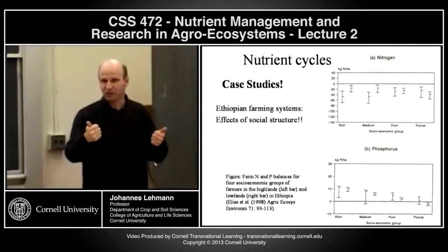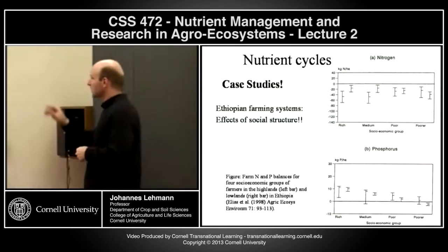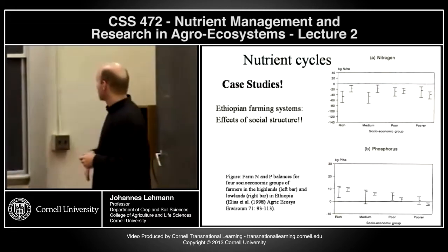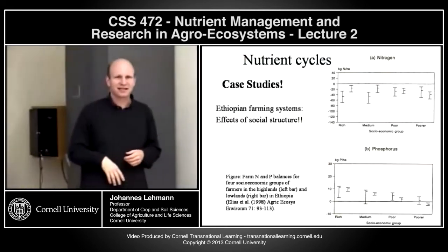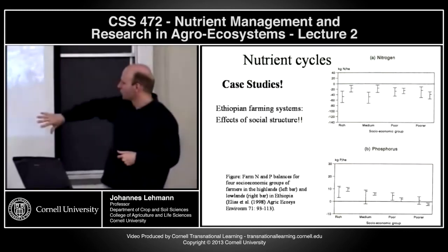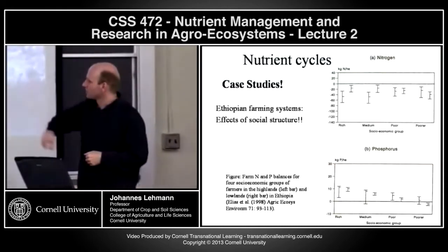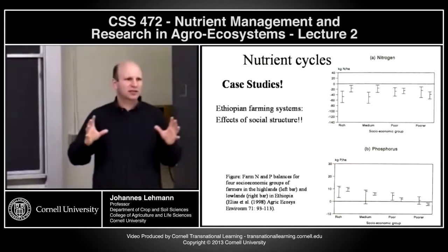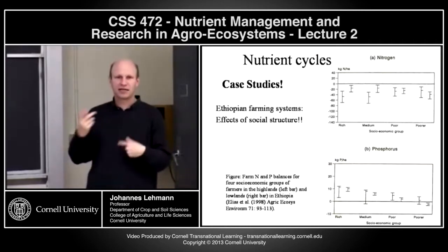For nitrogen, we have gaseous losses — N₂O, N₂, NH₃ — and leaching losses of nitrate, so the budget can very quickly go negative. Images from Western Kenya illustrate this: one farmer has a thatched roof, mud house without windows, and grows mainly corn; an adjacent wealthier farm has animals, bananas, and coffee. The wealth structure has a huge impact on what is cropped, which in turn has a huge impact on the nutrient cycles in these systems.